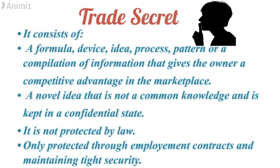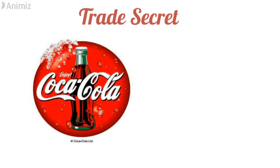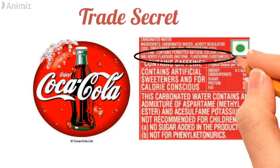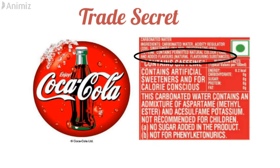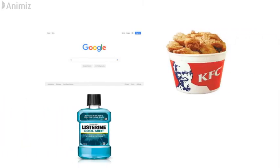The next type of intellectual property right is a trade secret. It consists of a formula, a device, an idea, a process, a pattern, or a compilation of information that gives the owner a competitive advantage in the marketplace. It is a novel idea that is not common knowledge and is kept in a confidential state. It is not protected by law and can only be protected through employment contracts and maintaining tight security. A famous example of a trade secret is the secret recipe of Coca-Cola — everything is mentioned on the label, but the natural flavoring substance is still kept secret. Many companies have tried to copy the formula but have not succeeded in getting the exact taste. Other examples of trade secrets are Google's search algorithm, KFC's chicken recipe, the Listerine formula, and McDonald's sauces.